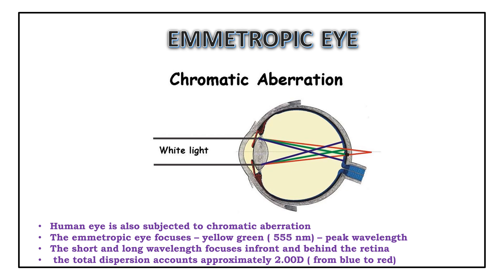The same thing happens in our eye. When white light strikes the optical components of the eye, they disperse it into different wavelengths — blue focuses in front and red focuses behind the retina. In an emmetropic eye, yellow-green focuses on the retina, while blue is in front and red is behind. The total dispersion accounts to around two diopters of refractive error.